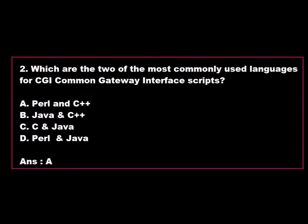Question 2: Which are the two most commonly used languages for CGI (Common Gateway Interface) Scripts? Option A: Perl and C++. Option B: Java and C++. Option C: C and Java. Option D: Perl and Java. Option A is correct. Perl and C++ are the two most commonly used languages for CGI Common Gateway Interface Scripts.